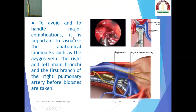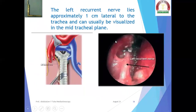To avoid major complications, it is important to visualize anatomical landmarks such as the azygous vein, the right pulmonary artery, the right and left main stem bronchi, and the recurrent laryngeal nerve. Here we can see the real picture of the right pulmonary artery and right main bronchus, the tip of the mediastinoscope compressing the innominate artery, and the lymph nodes in the subcarinal region. The left recurrent laryngeal nerve lies approximately one centimeter lateral to the trachea and can usually be visualized in the mid-tracheal plane.